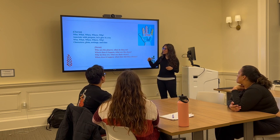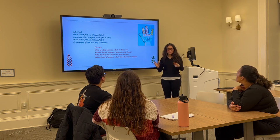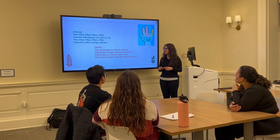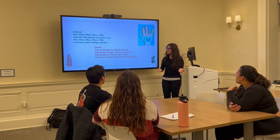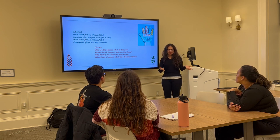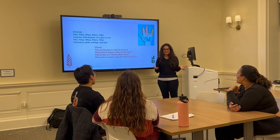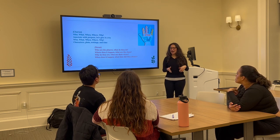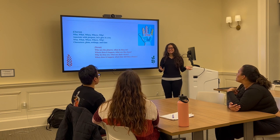Excellent. So moving on to the actual verse — it's a continuation of the five W's, going into a little bit more explanation. Who are the players, what did they do? Where does it happen, where are the clues? Why do they act, what are their views? When does it happen, what time did they choose?